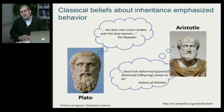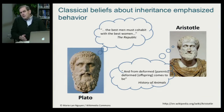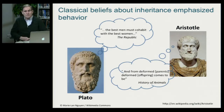His student, Aristotle, was concerned about mating of people he didn't think should mate, that had various physical as well as behavioral deformities.